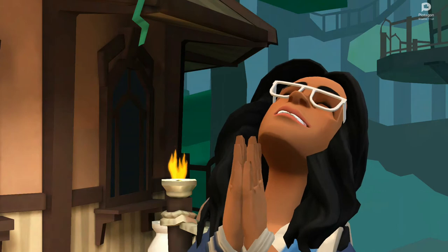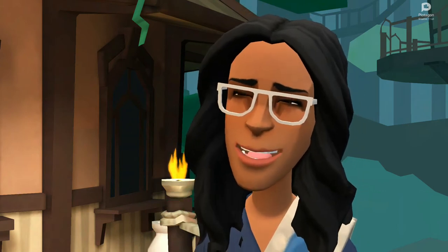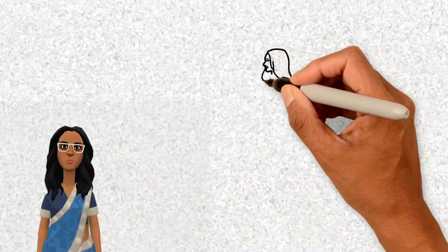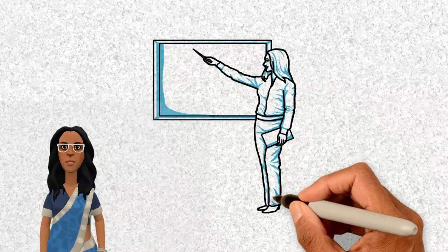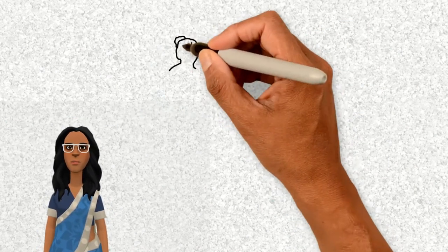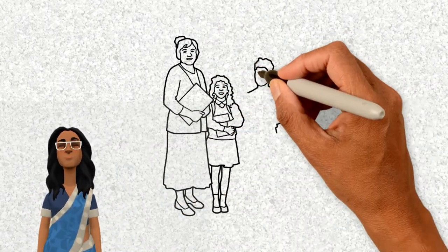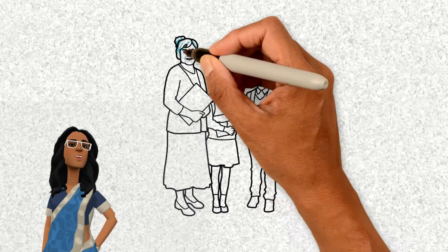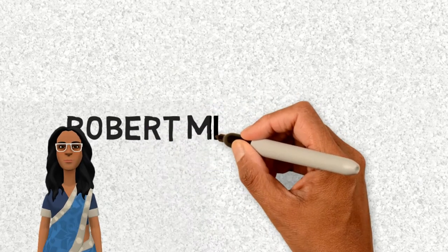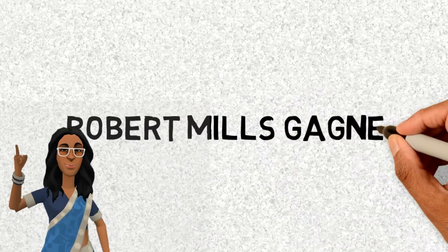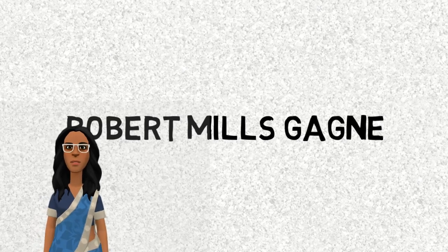Hello, my name is Yuma, and I'm so excited to explain Gagné's conditions of learning to you. If you've realized that teaching someone to play piano takes a different skill set than teaching them algebra, or if you've ever started a lesson by gaining the learner's attention or eliciting their prior knowledge, then you've used the principles outlined by Robert Mills Gagné without even realizing it.